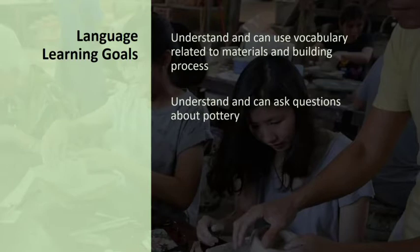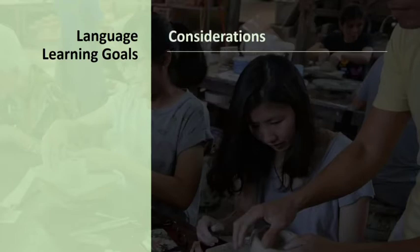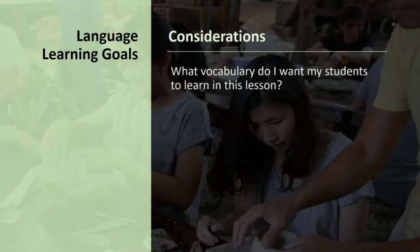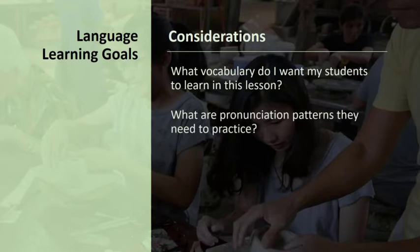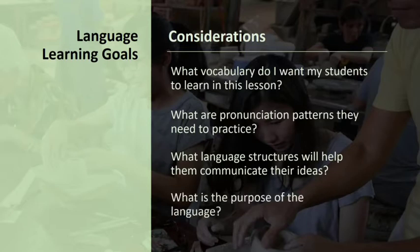Students may also need to be able to explain issues involved in the building process, such as how to talk about cause and effect — for example, if the clay gets too dry, then it cannot be molded any longer. It can be helpful to think about student language learning goals from a few different angles: What vocabulary do I want my students to learn? What pronunciation patterns do they need to practice? What language structures will help them communicate their ideas? And lastly, what is the purpose of the language — is it to explain, persuade, or introduce?